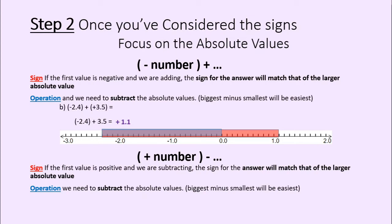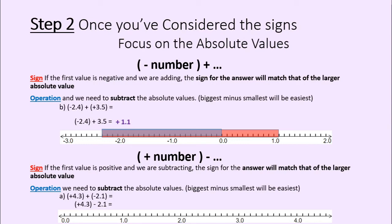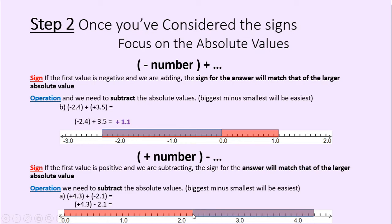Let's show you an example. Positive 4.3 — that's a positive number — and I'm adding negative 2.1 to that. Adding a negative: the signs are different, so that's the same as a subtraction — positive 4.3 minus 2.1. On the number line, starting at positive 4.3 and taking away 2.1 — which is the bigger absolute value? 4.3 is definitely bigger than 2.1, so our answer will remain positive. Doing bigger minus smaller: 4.3 minus 2.1 takes me from 4.3 all the way down to 2.2 — positive 2.2.